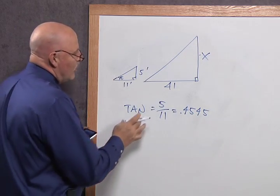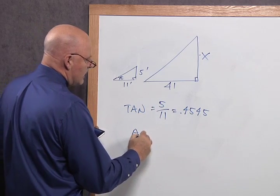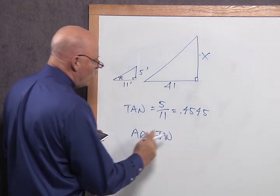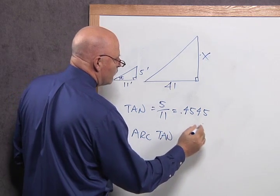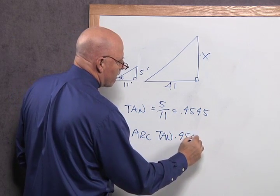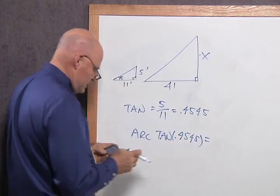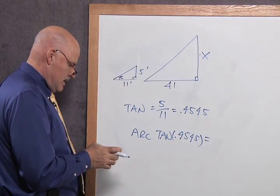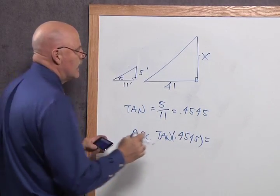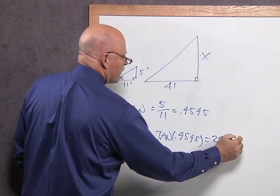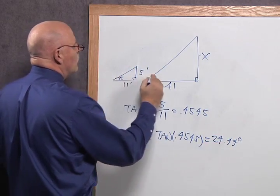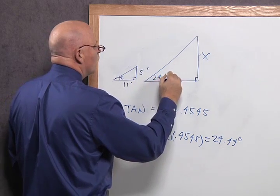Then, if I know this, I can use the arc tangent, or the angle whose tangent is 0.4545. I hit my second button, then I hit my arc tangent, and I get 24.44, rounded up to hundredths. So then this angle is 24.44 degrees.